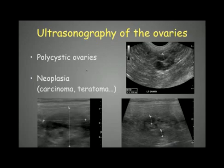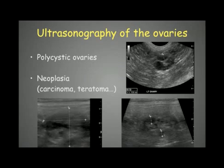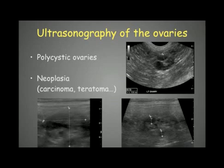We can also see neoplasia, such as carcinoma or teratomas. Here we have an example of a neoplasia with the ovary measuring two to three centimeters — that's definitely too big. It's an isoechoic mass with some hypoechoic cavities measuring around six to seven millimeters in this case. That's quite typical of neoplasia, because an ovary with a simple cyst would be much more anechoic. The hypoechoic area here is a necrotic region secondary to the neoplasia.